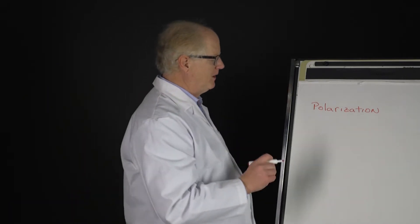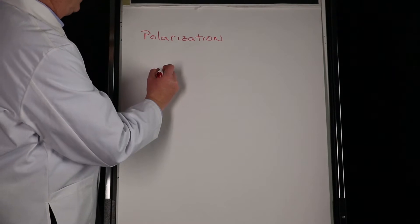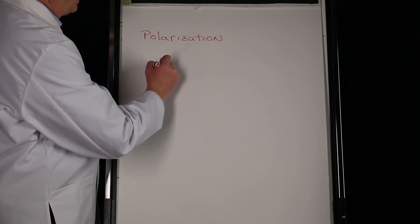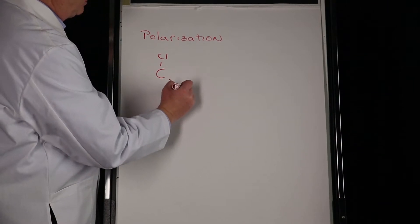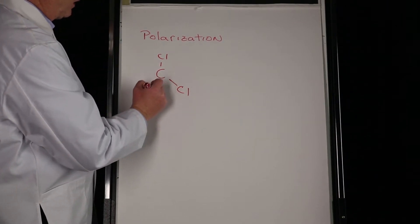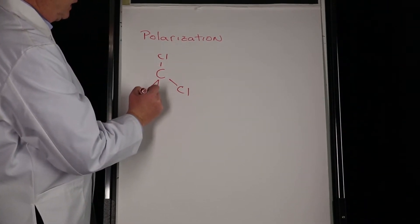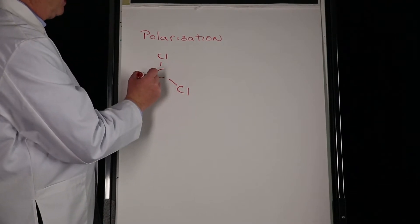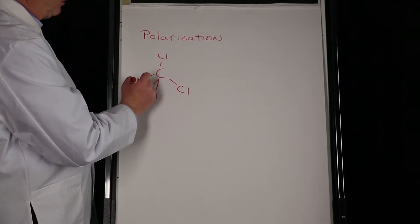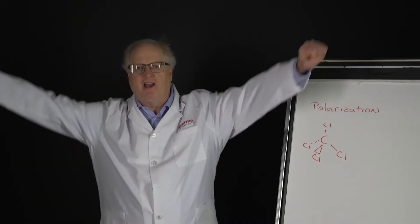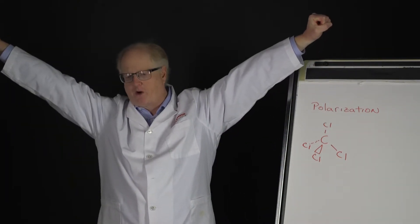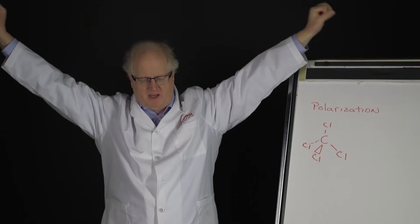The classic molecule, as I promised at the outset that we would look at, is carbon tetrachloride. So that chlorine is coming out of the paper, this one's going back into it, so you have the four chlorines.